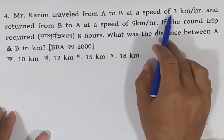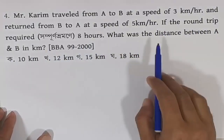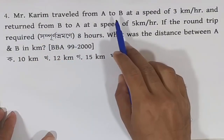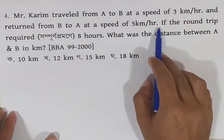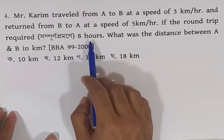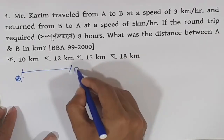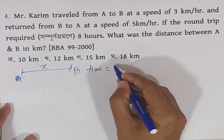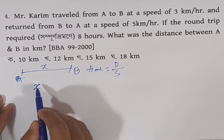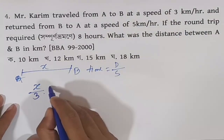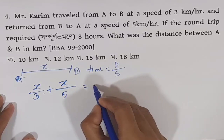Problem 3: A person travels from A to B, a distance of 9 km. The speed going is 3 km per hour and the speed returning is 5 km per hour. The total journey takes 8 hours. Let the distance be x. We know that time equals distance divided by speed. So time = x/3 plus x/5, and the total equals 8 hours.